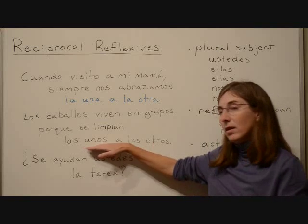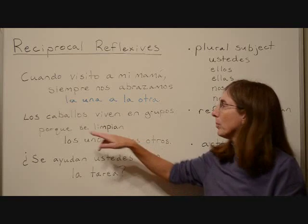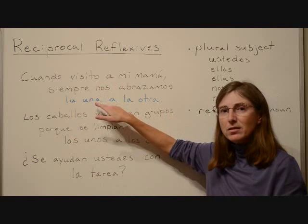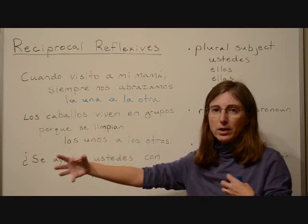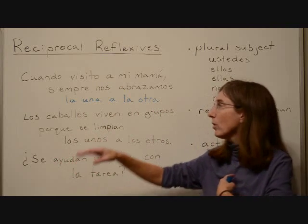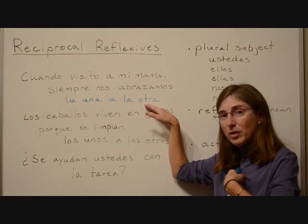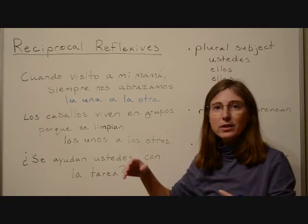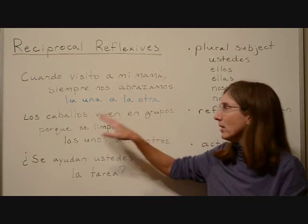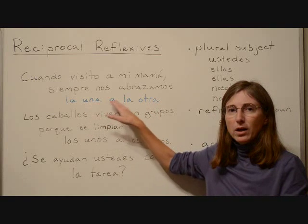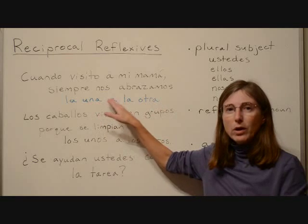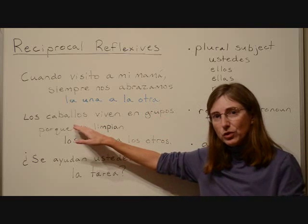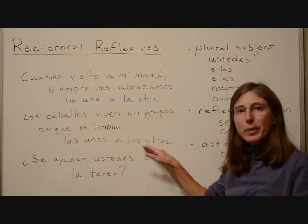Notice that this is plural — 'los unos a los otros' — because our subject is 'los caballos.' Whereas in the previous sentence, it's just me and my mother hugging one another. We are both girls, so it's singular feminine: 'la una a la otra.' If I was a guy talking about hugging my mom, one of these would have to be masculine: 'la una al otro' or 'el uno a la otra.' In this case, 'caballos' is masculine, so these are both masculine.